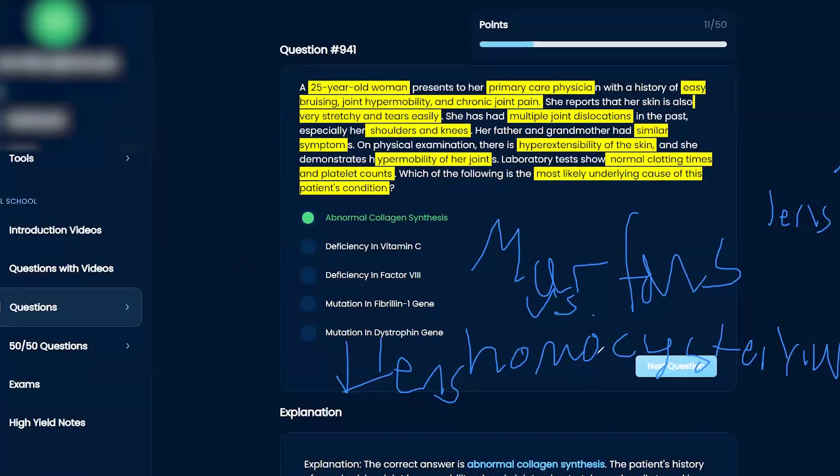But one thing specific for homocystinuria, they'll also get a lot of clots. So that's super important to know, because young people that get strokes, heart attacks, things like that, you're like how can that happen?